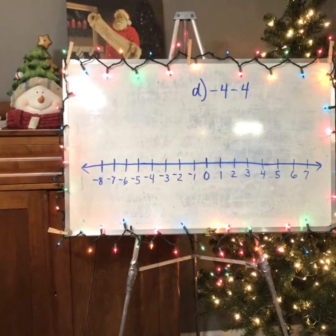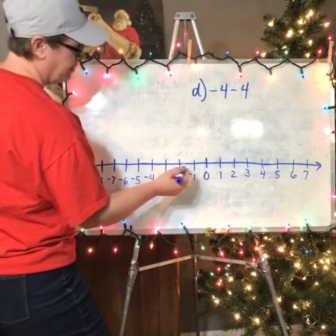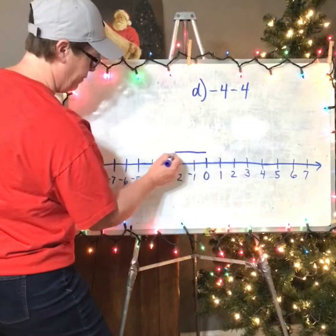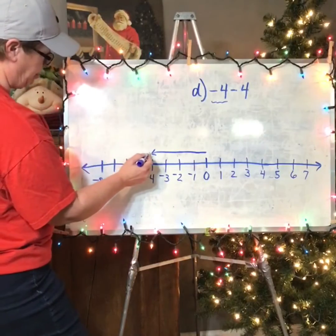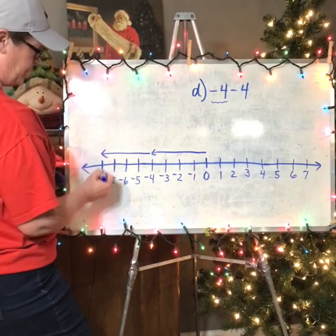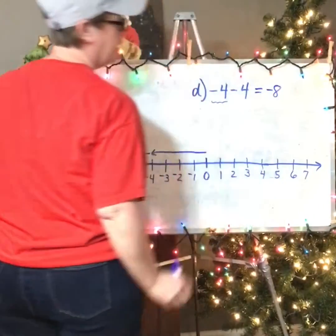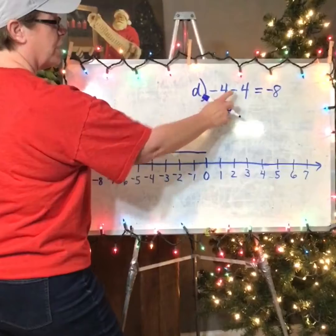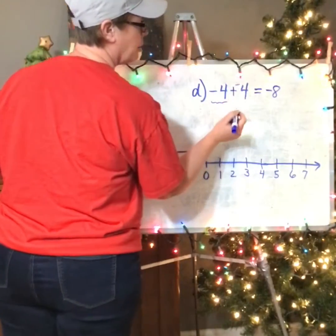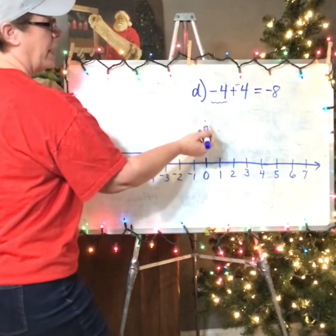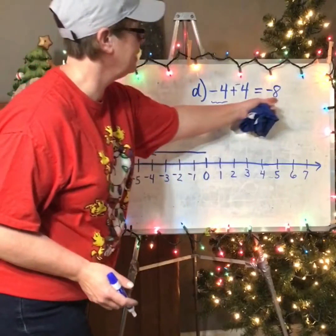Question D is negative 4 minus 4. I'm going to start at negative four and then take away four more, so I drop back four more spots, which leaves me at negative eight. If I didn't see that right away — subtraction is the same as adding the opposite: switch to add, second number goes opposite. I have four negatives plus four more negatives. Negatives plus more negatives is a bunch of negatives — negative eight.